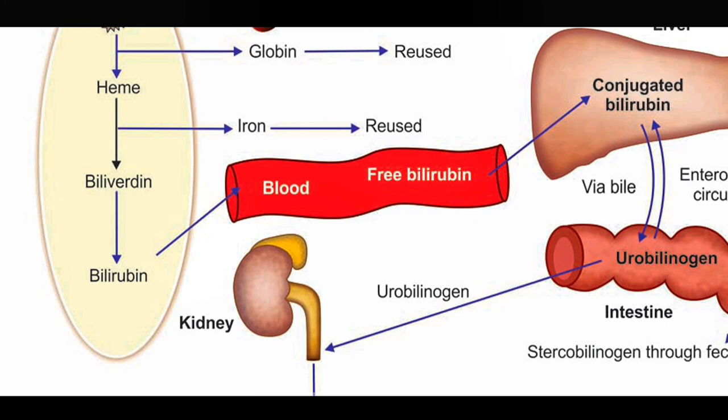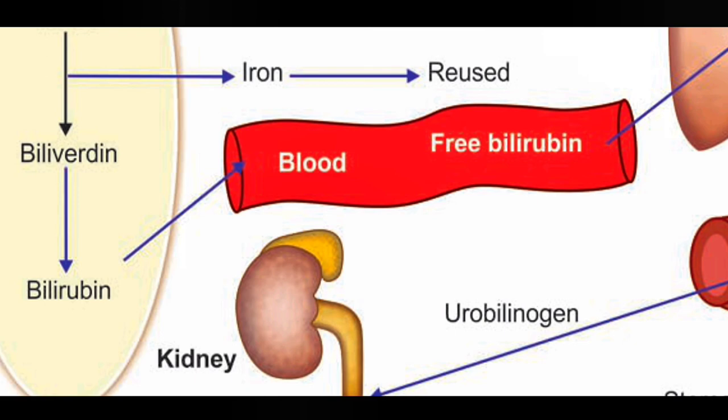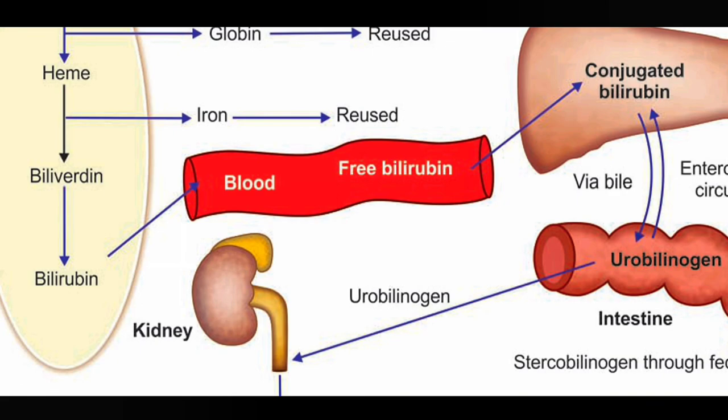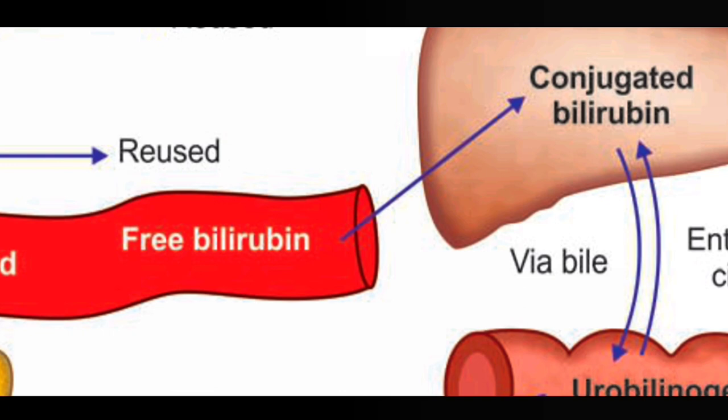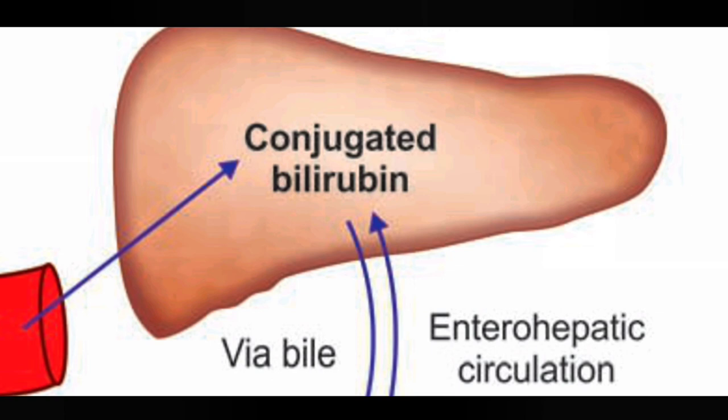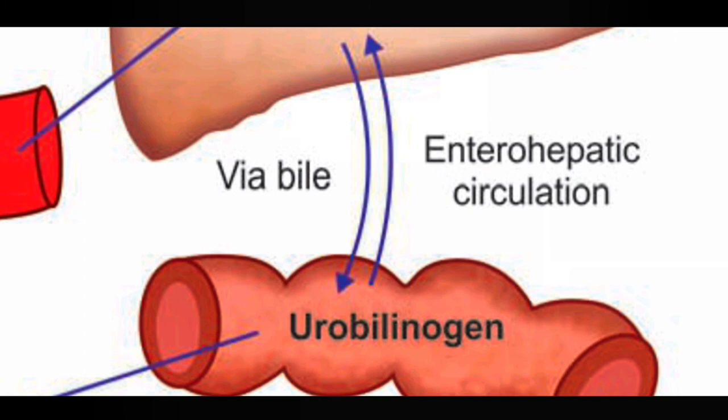Free bilirubin, or unconjugated bilirubin, is transported by albumin. In the liver, free bilirubin is conjugated with glucuronic acid to form conjugated bilirubin. Conjugated bilirubin then goes via the bile pathway through enterohepatic circulation.